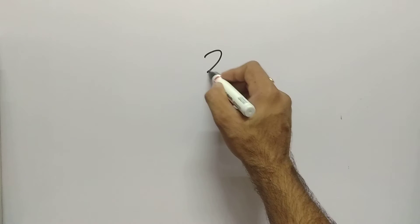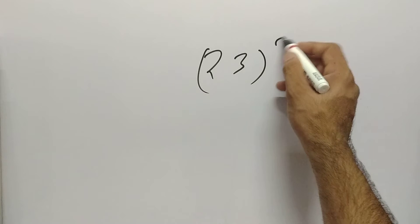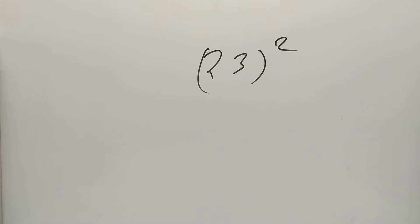In this video we are going to learn how to find the square of any two-digit number. If I ask you what is the square of 23, how much time will you take? One minute? But I can tell you the answer just in two seconds. The answer is 529. Do you want to learn this technique?